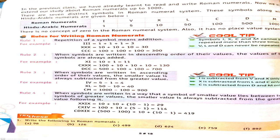Here we have some rules. First rule: repetition of a symbol means addition. If we repeat a symbol, we will add it. For example, I, I, I means 1+1+1 = 3. The symbols I, X, C and M cannot be repeated more than 3 times. And V, L and D can never be repeated.